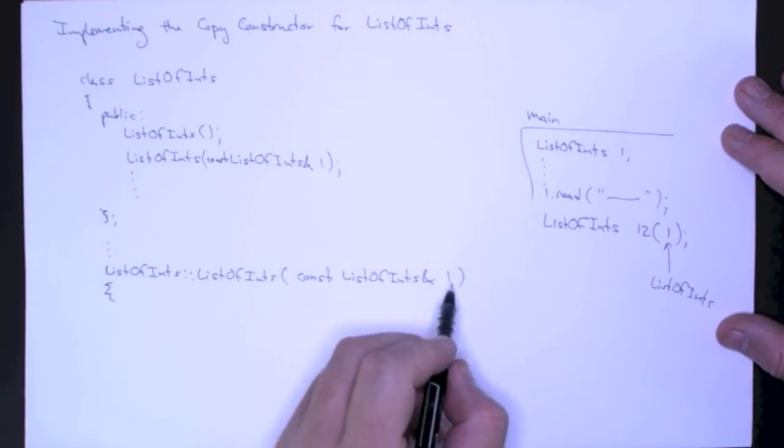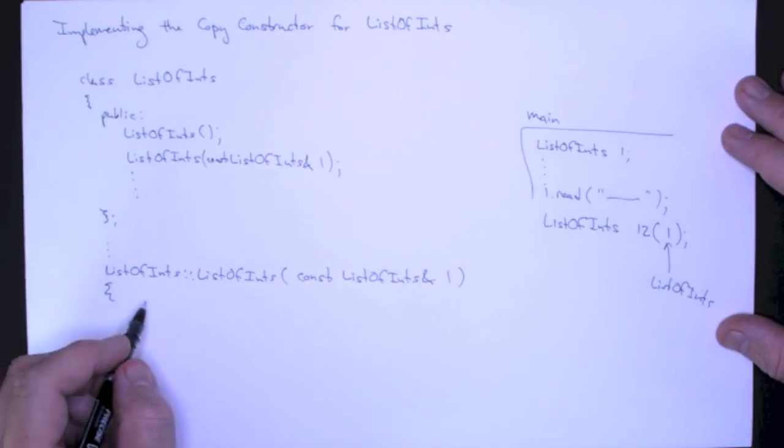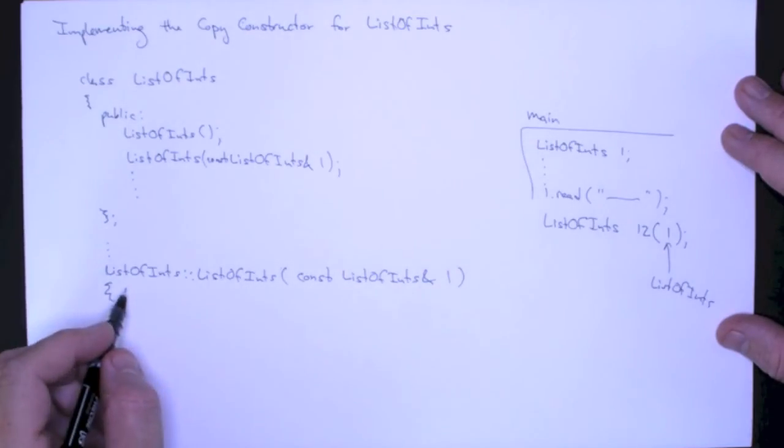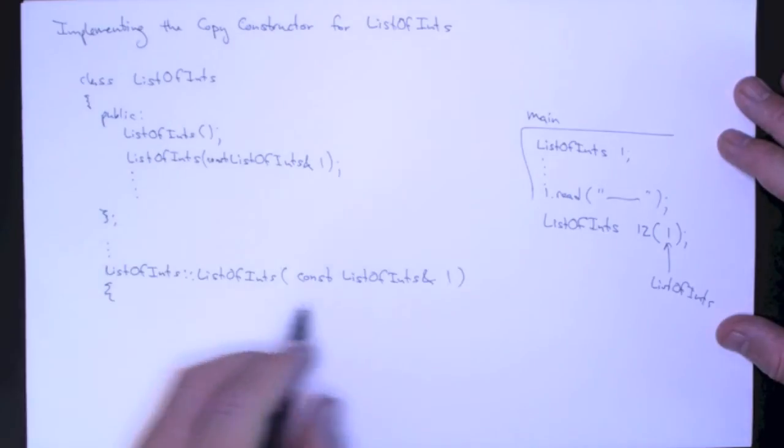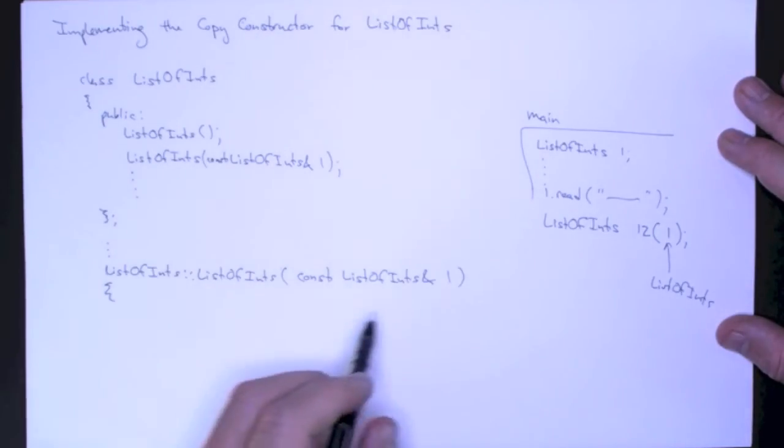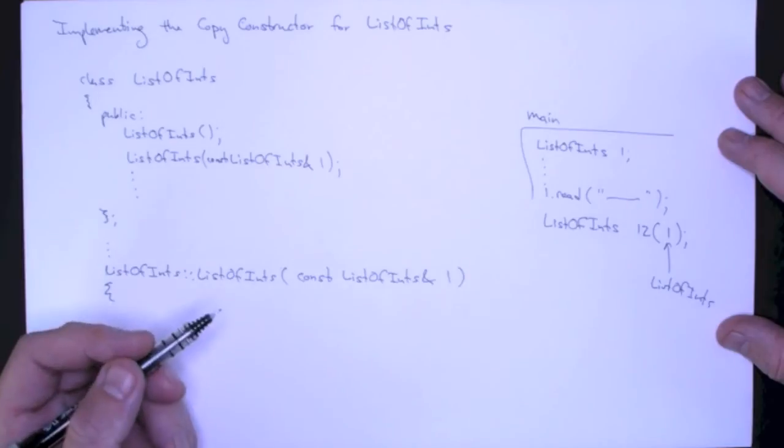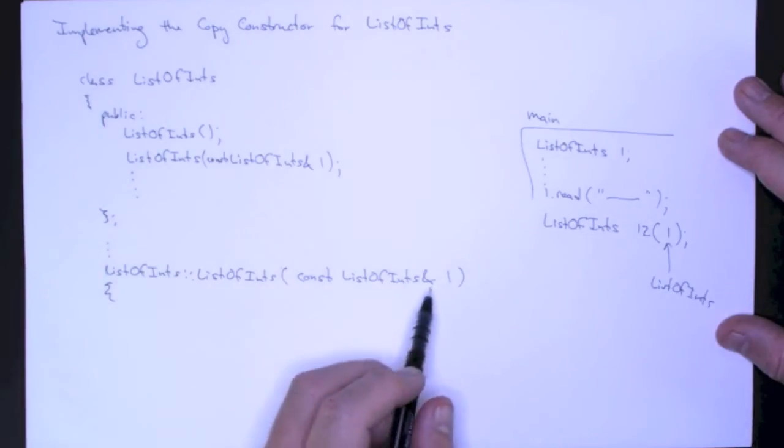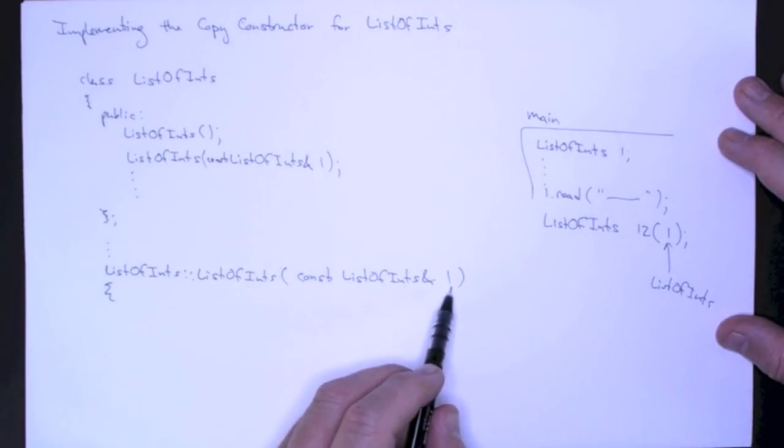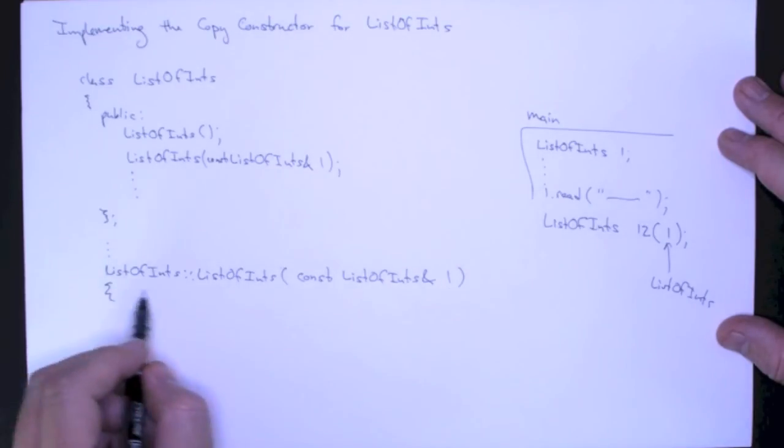First of all, I want to make a copy of l into myself, into this object. And I have a method for doing that. It's operator equal. So the question is, how can I assign l to me? How can I assign l to this object?